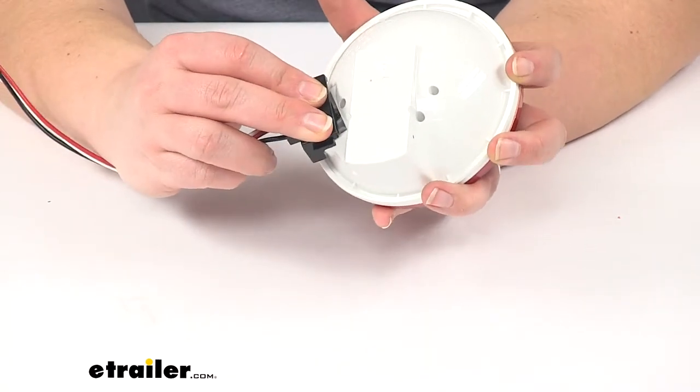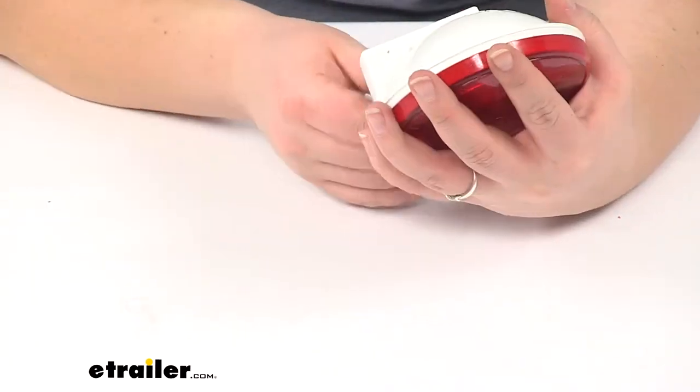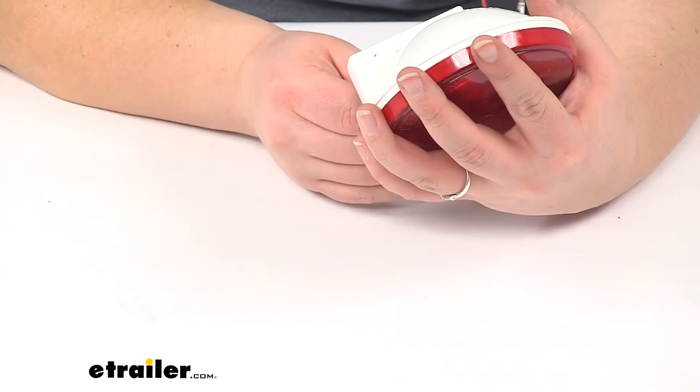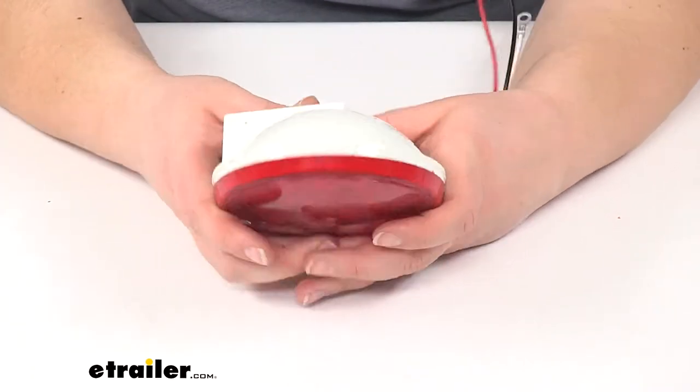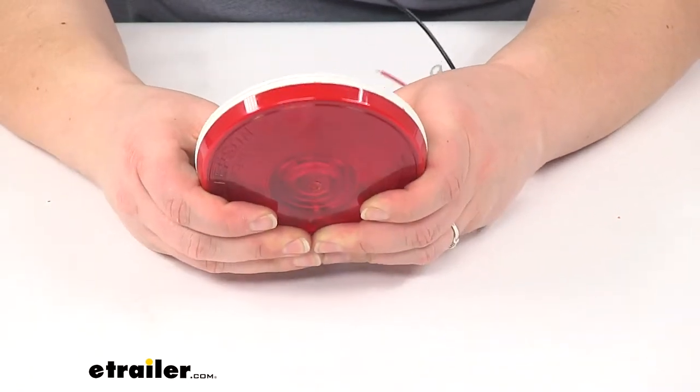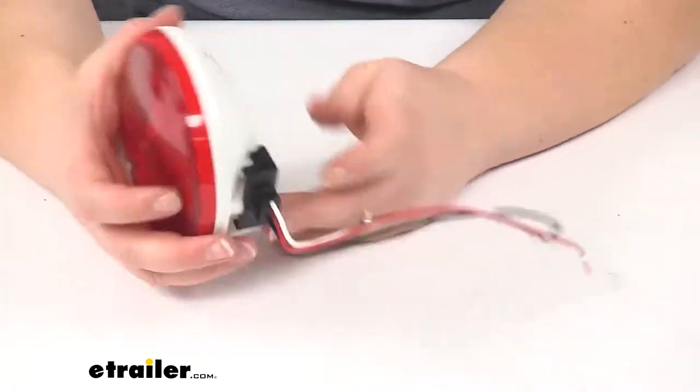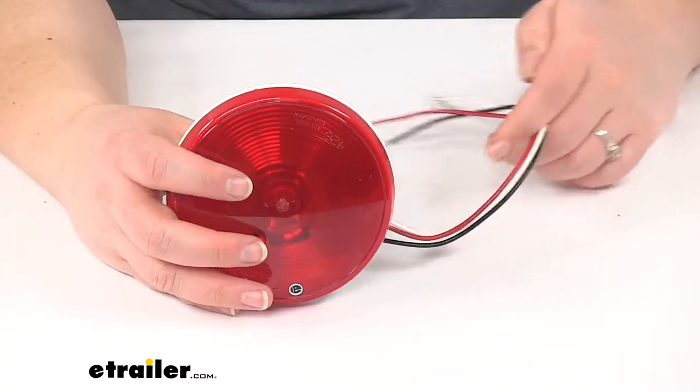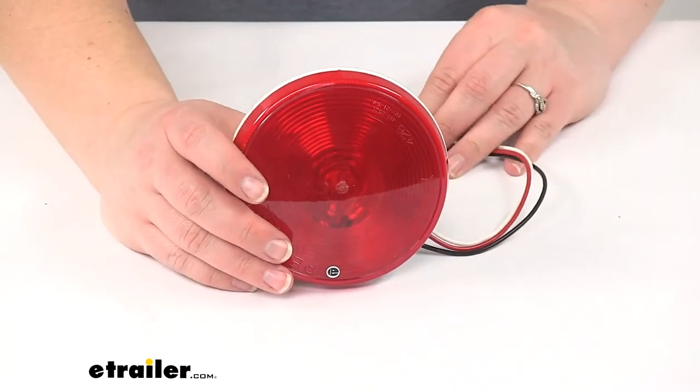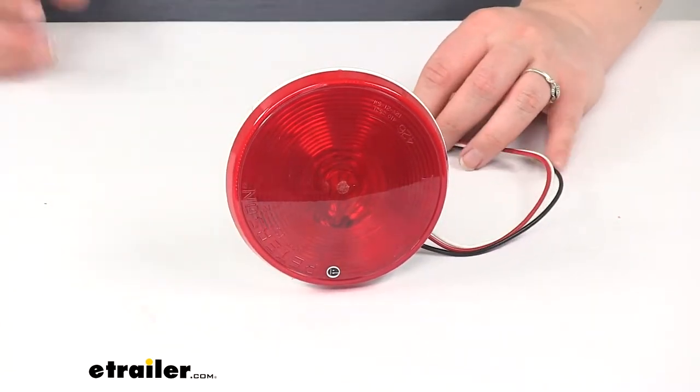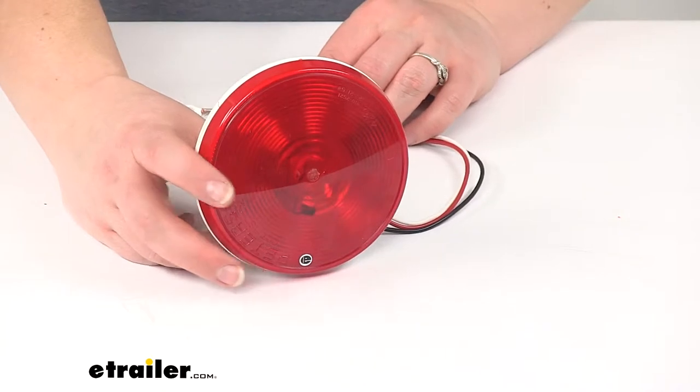That plug is just going to pop into the back, match up those prongs, and something I like about the Peterson Lights is that they already have a little bit of dielectric grease installed on those terminals to help maintain a good connection and also prevent any water from getting in there and causing any damage or bad connections overall.